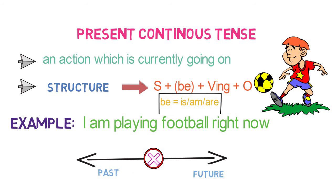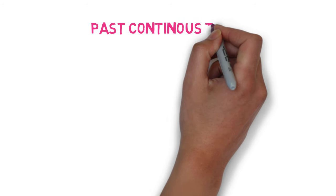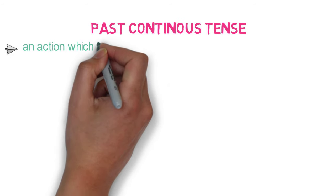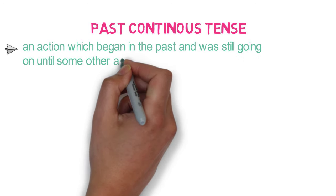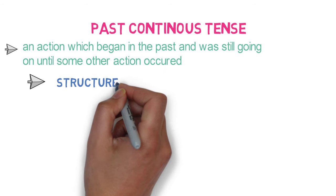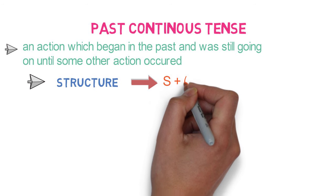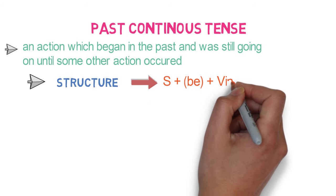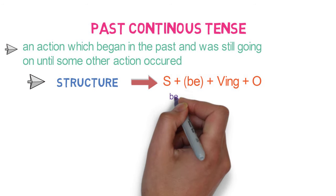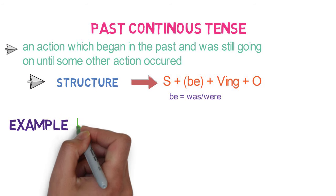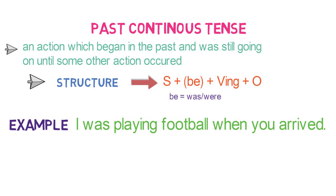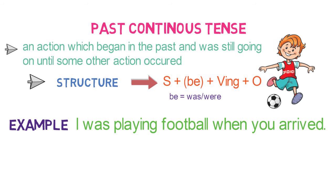Let's look into the next tense. Past continuous tense refers to an action which began in the past and was still going on until some another action occurred. The structure is: subject plus be verb plus verb-ing form plus object. The be verbs here include was and were. For example: 'I was playing football when you arrived' — meaning my action of playing was going on until you arrived.